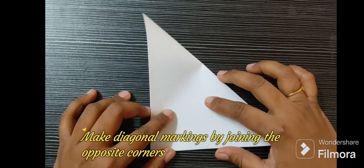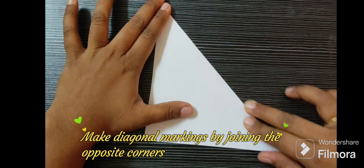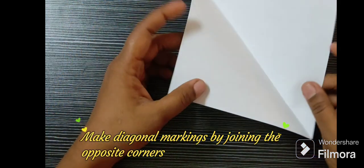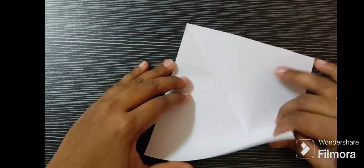Take the square paper and fold it by joining the opposite corners. Likewise, you can make diagonals.